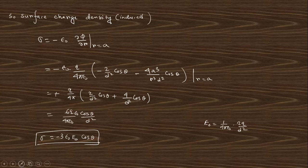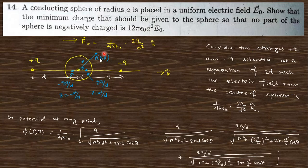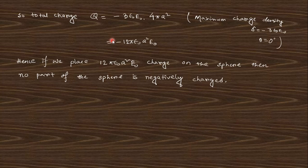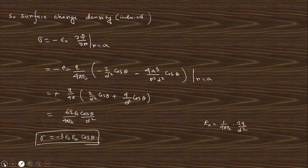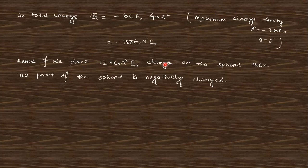Substituting E0 in terms of the charge parameters, we get the surface charge density. The total minimum charge is found by requiring the maximum negative contribution to vanish. Placing this amount of positive charge on the sphere ensures no part is negatively charged — the charge density varies over the surface but remains non-negative throughout.